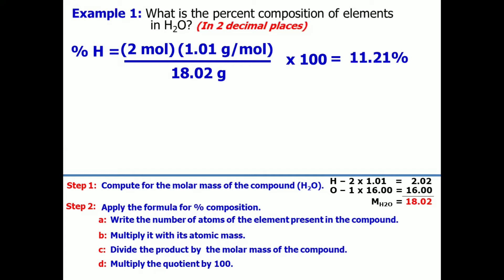Let's proceed to the second element, which is oxygen. Same thing, we will apply all the following steps. Write down the atoms of the element present in the compound. So, we have 1 mole of oxygen. Then, multiply it with its atomic mass. 16 grams per mole. Which, again, you can get from the periodic table of elements.